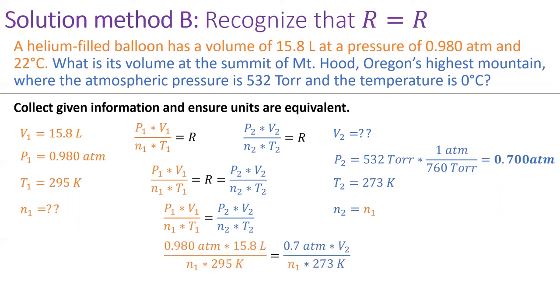Then plug all these values into the central equation. Since n1 shows up on the denominator on both sides of the equation, we can cancel it out. This leaves us with an equation with only one unknown, V2. Solving for V2, I get 20.5 liters, the same value I got via method A.